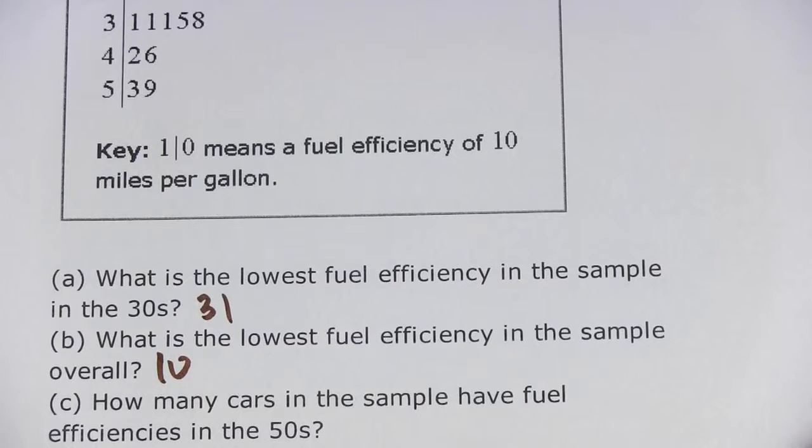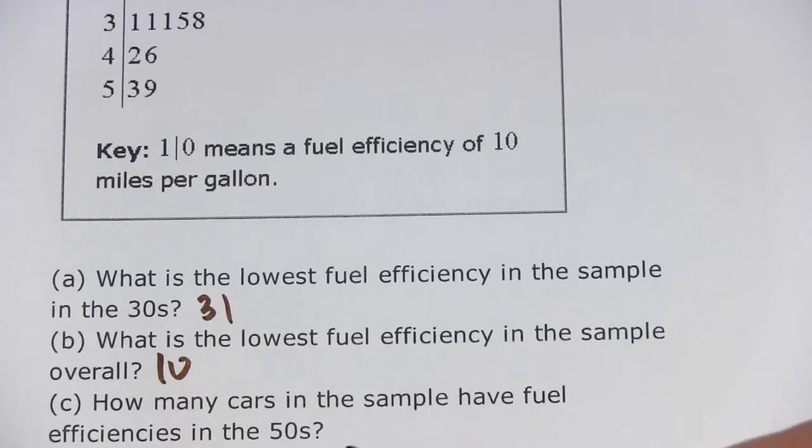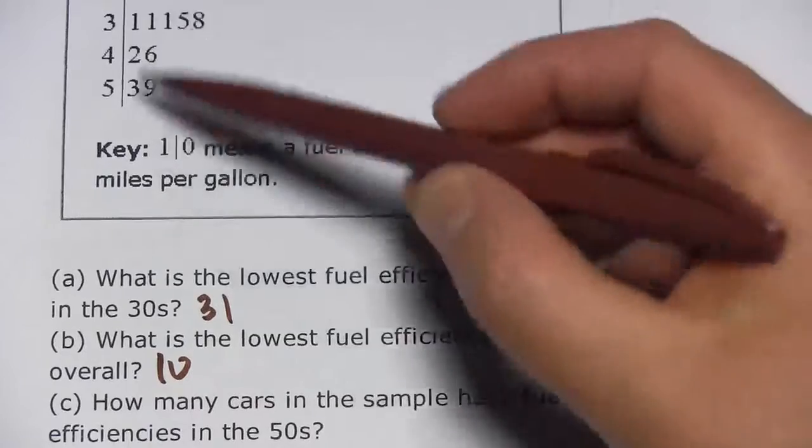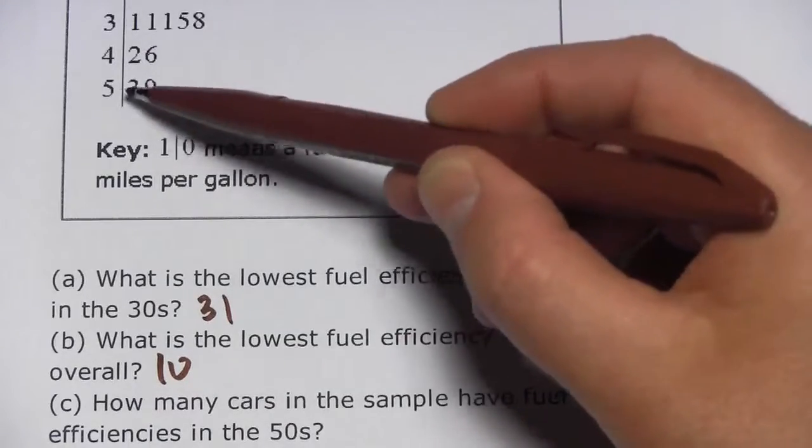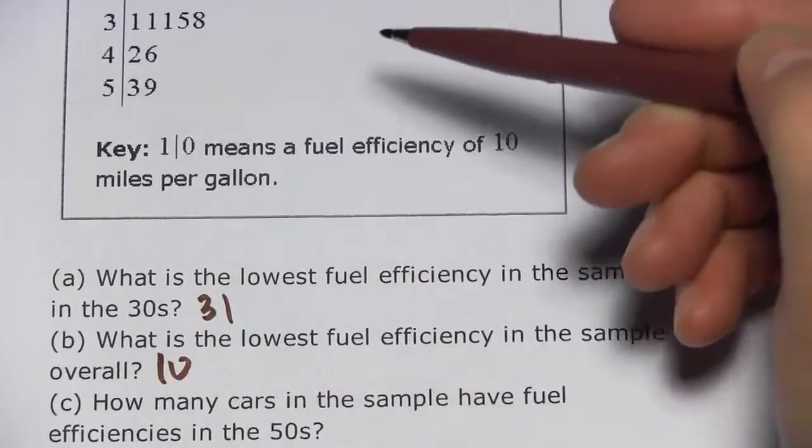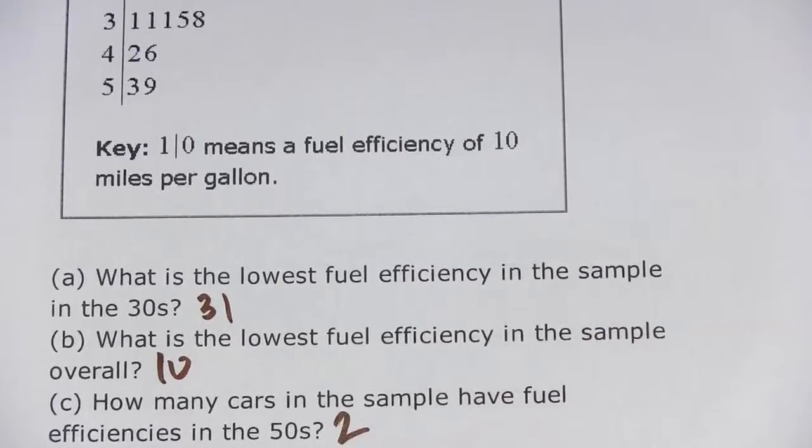And finally, C says, how many cars in the sample have fuel efficiencies in the 50s? Well, go down to the 50s here. We have two numbers, 53 and 59. So that represents two cars. So that's two.